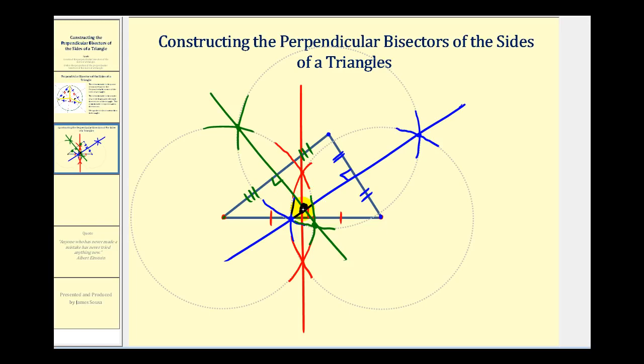We could construct a circle with the center here that would pass through the three vertices of the triangle. I hope you found this useful.